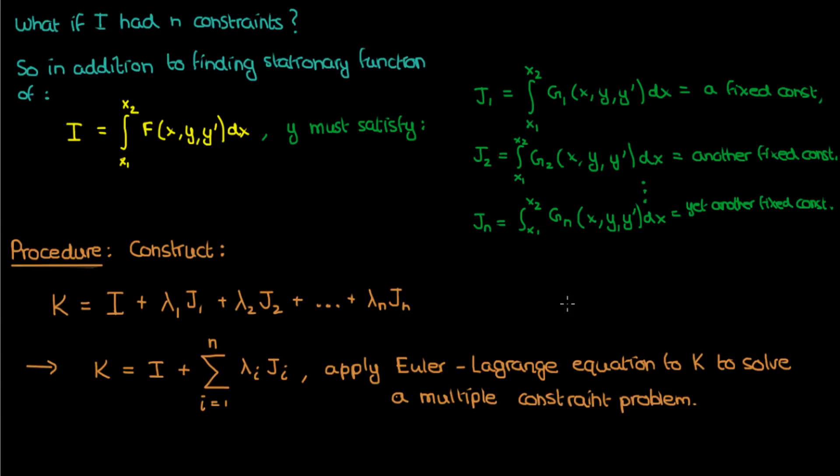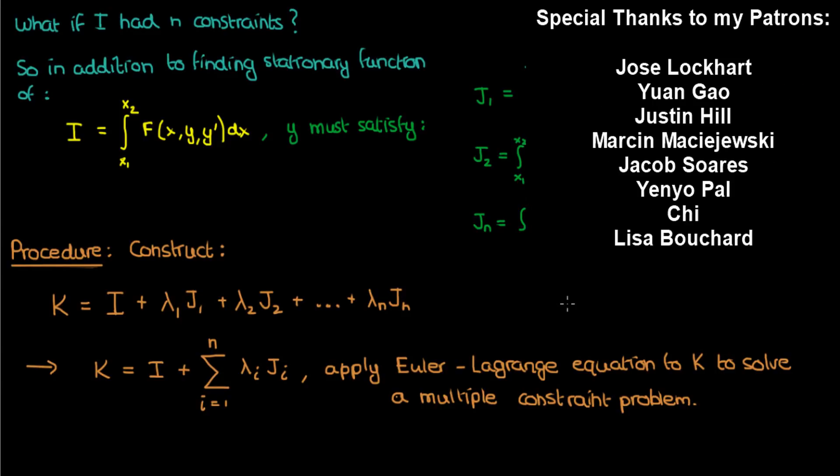That does it for this video. In the next lesson we're actually going to give some context to this constrained variation by solving a real physics problem, where we'll use constrained variation to derive the equation of a catenary — some really exciting stuff. I'll finish off by thanking the following patrons for supporting me at the $5 level or higher. If you enjoyed the video, feel free to like and subscribe. This is the Faculty of Khan signing out.